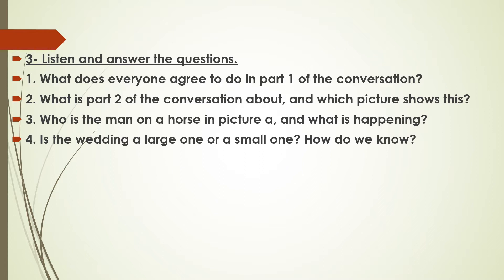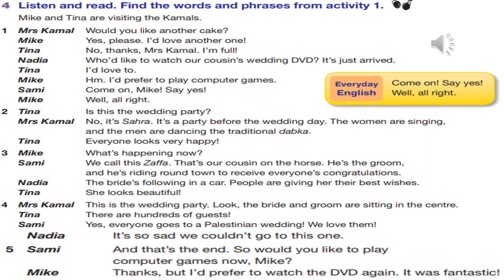Listen and answer the questions. Number one: what does everyone agree to do in part one of the conversation? Number two: what is part two of the conversation about, and which picture shows this? Number three: who is the man on a horse in picture A, and what is happening? Number four: is the wedding a large one or a small one, and how do we know?